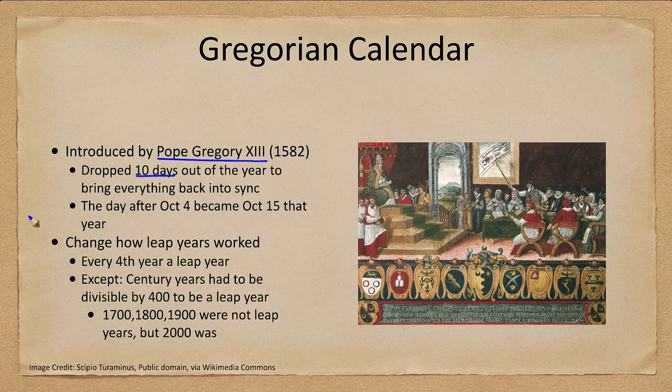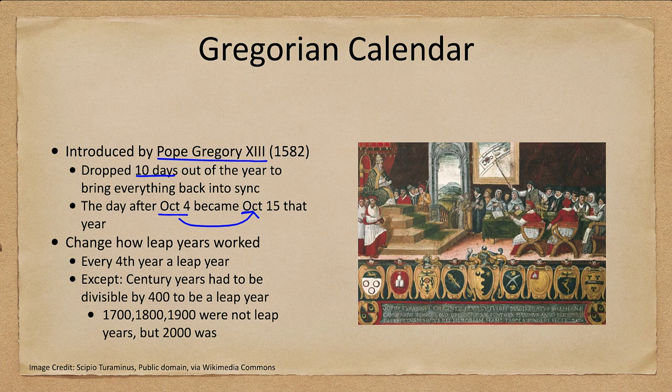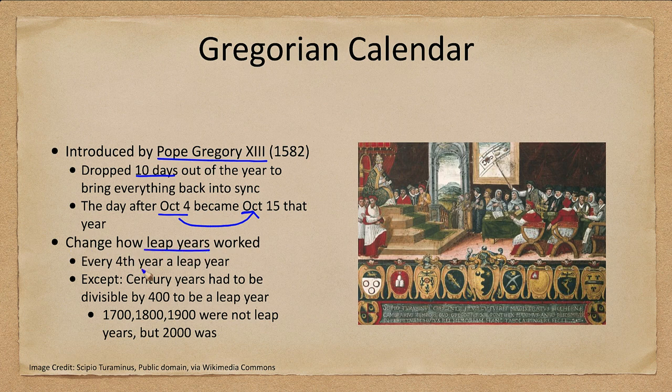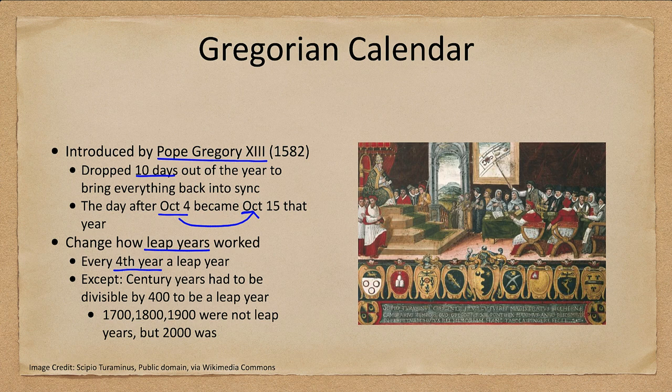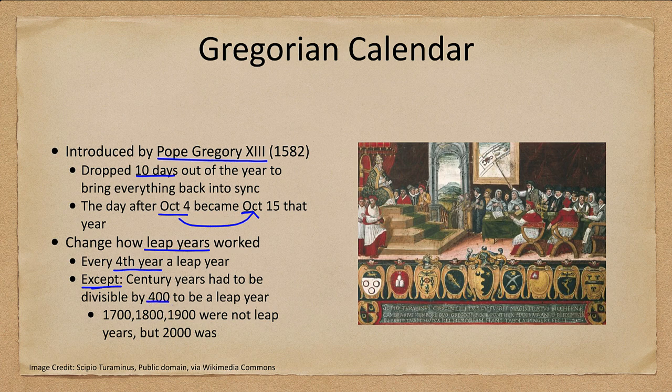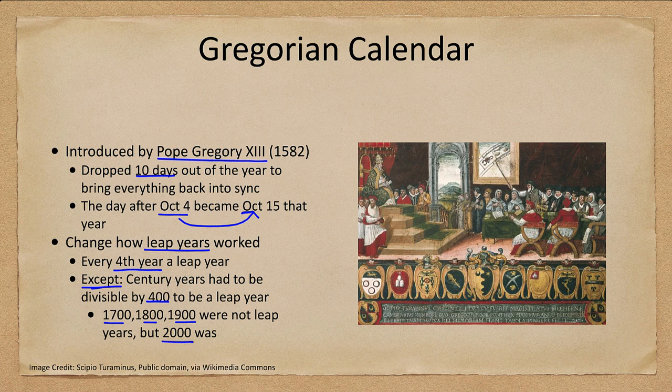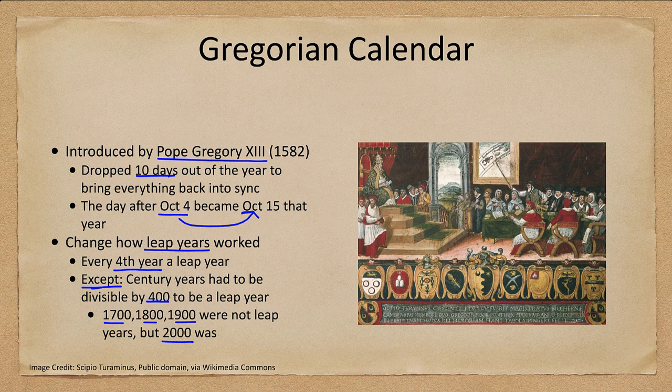First of all we had to drop 10 days out of the calendar. So you went to sleep on October 4th and you woke up on October 15th. Why? That just brought everything back into line. All the days that had been added incorrectly over those 1500 years had to then be corrected. So we had to get rid of those 10 days. And also changed how leap years work. So every fourth year is a leap year just as in the julian calendar except century years have to be divisible by 400 to be a leap year. That was not the case in the julian calendar. So in this case 1700, 1800 and 1900 were not leap years but 2000 was. 2100 will not be a leap year.